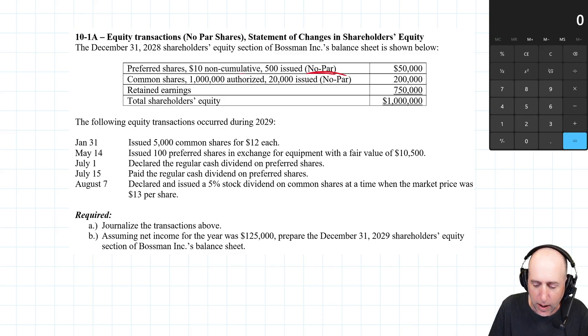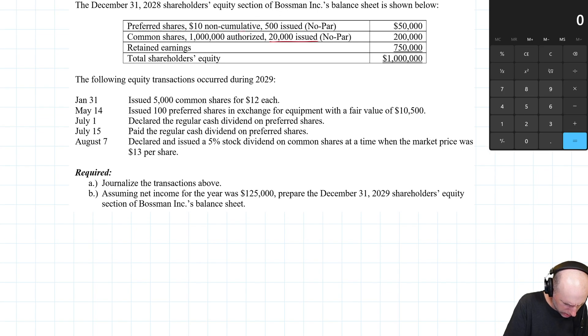Common shares, a million authorized. All right, so we're allowed to issue up to a million, but we've only issued 20,000 shares and $200,000 worth of shares. So it's $10 a share, and you can see the retained earnings. Okay, a little bit of an intro there, but the following equity transactions occurred, and we're going to have to do journal entries. So, January 31st, we issued 5,000 common shares for $12 each. 5,000 times 12 is $60,000.